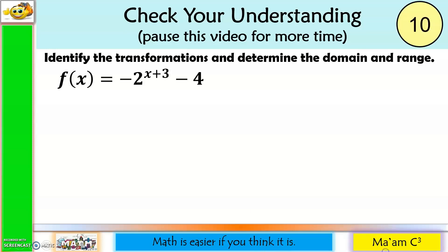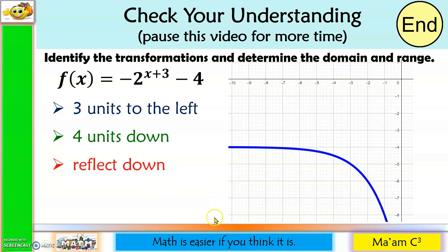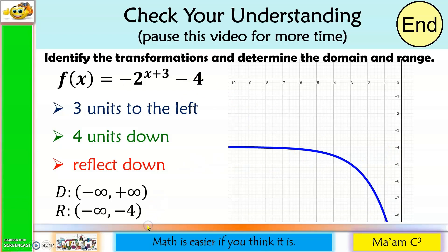Here are the answers. Let us enumerate the transformations: plus 3 in the exponent means the graph moves 3 units to the left; negative 4 means the graph moves 4 units down; and the negative means it will reflect down. For the domain and range: the domain is the set of all real numbers. For the range, since A is negative, it is from negative infinity, and since D is negative 4, the range is negative infinity to negative 4, with negative 4 not included.